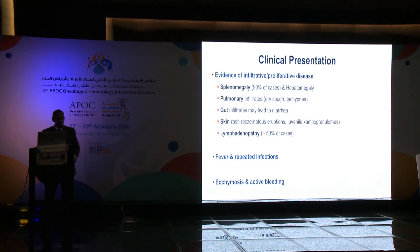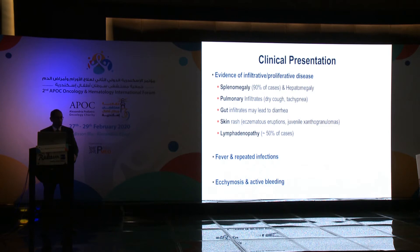Clinically, JMML presents with evidence of an infiltrative proliferative disorder. The most common presentations are splenomegaly and hepatomegaly, pulmonary infiltrates, gut infiltrates presenting with diarrhea, skin rash with eczematous eruptions, juvenile xanthogranulomatous lesions, and lymphadenopathy occurring in 50% of cases. Bleeding tendencies such as ecchymotic patches and even active bleeding are also observed.